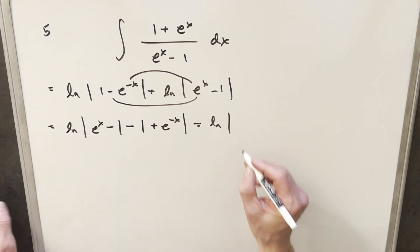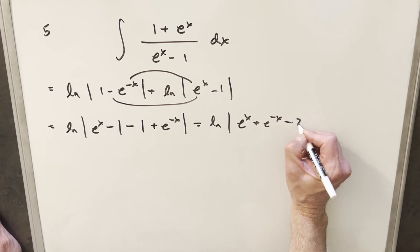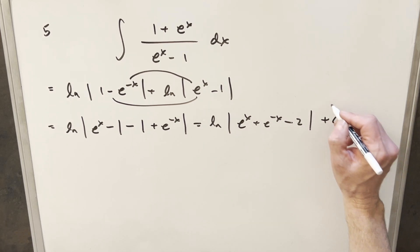So for the final solution, we're going to have natural log e to the x plus e minus x minus 2 plus c. And that's it.